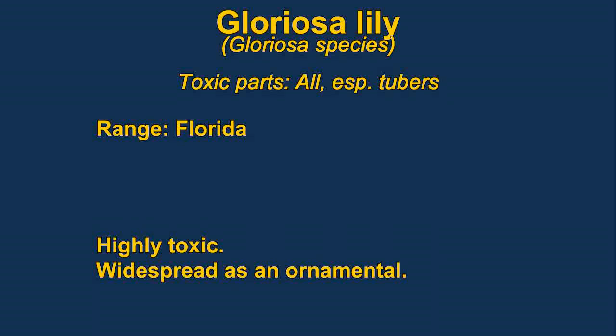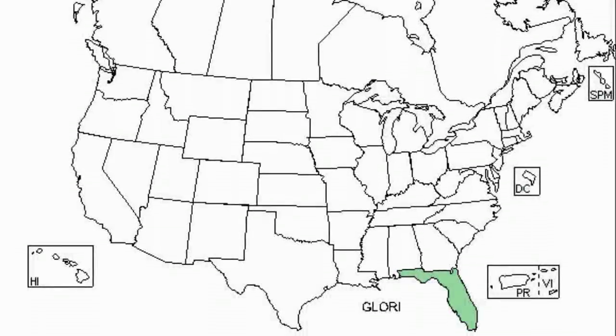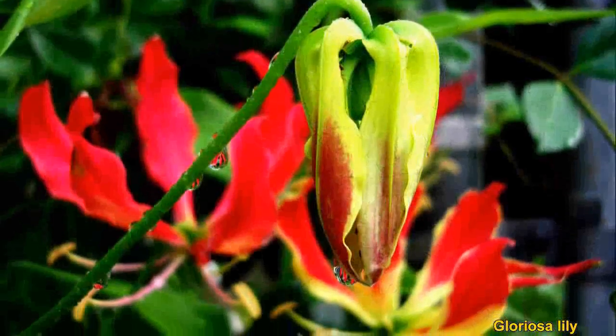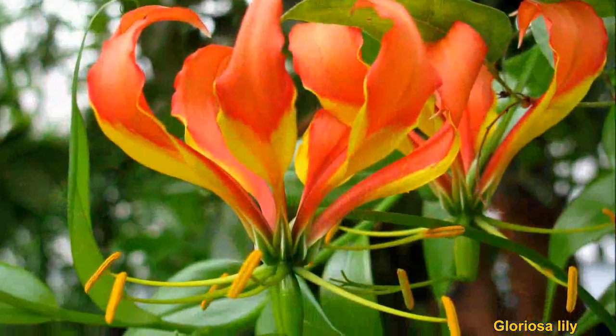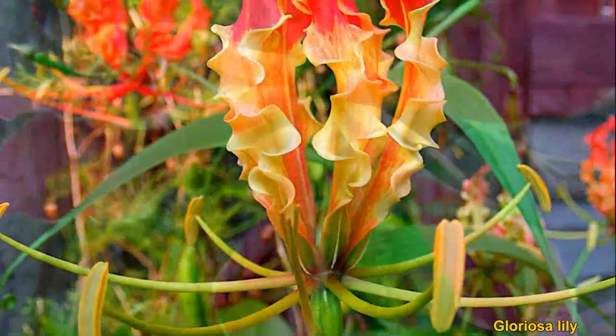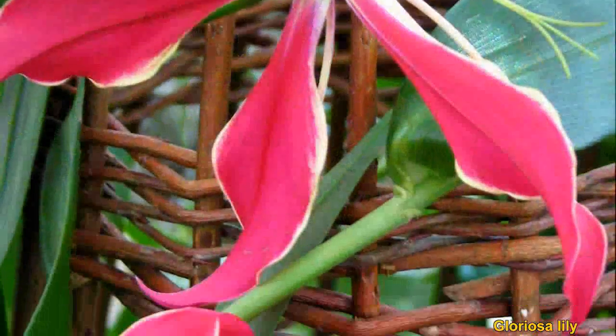Gloriosa lilies are highly toxic, especially the tubers. The main toxin is colchicine. Symptoms would be numbness of the lip, tongue, and throat, thirst, fever, vomiting, difficulty breathing, and convulsions. It is mainly found as a house plant, but it can also be found in landscapes.